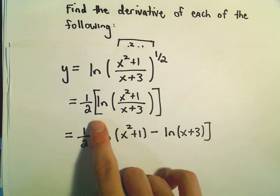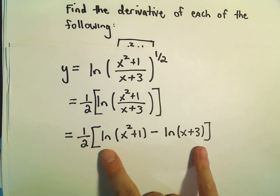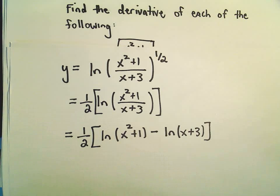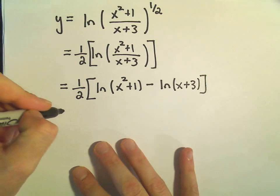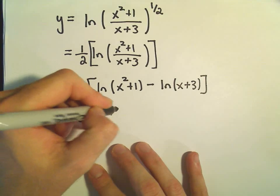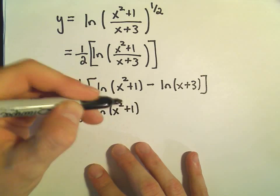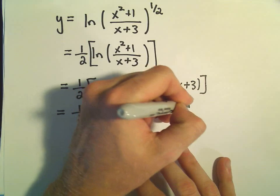And I'm sticking this in brackets here just because sometimes if you don't put it in brackets, people don't use brackets here, and then they forget to distribute the 1 half. So I put it all in brackets just to remind myself that I still have to distribute. So we have 1 over 2 times the natural logarithm of x squared plus 1 minus 1 over 2 times the natural logarithm of x plus 3.